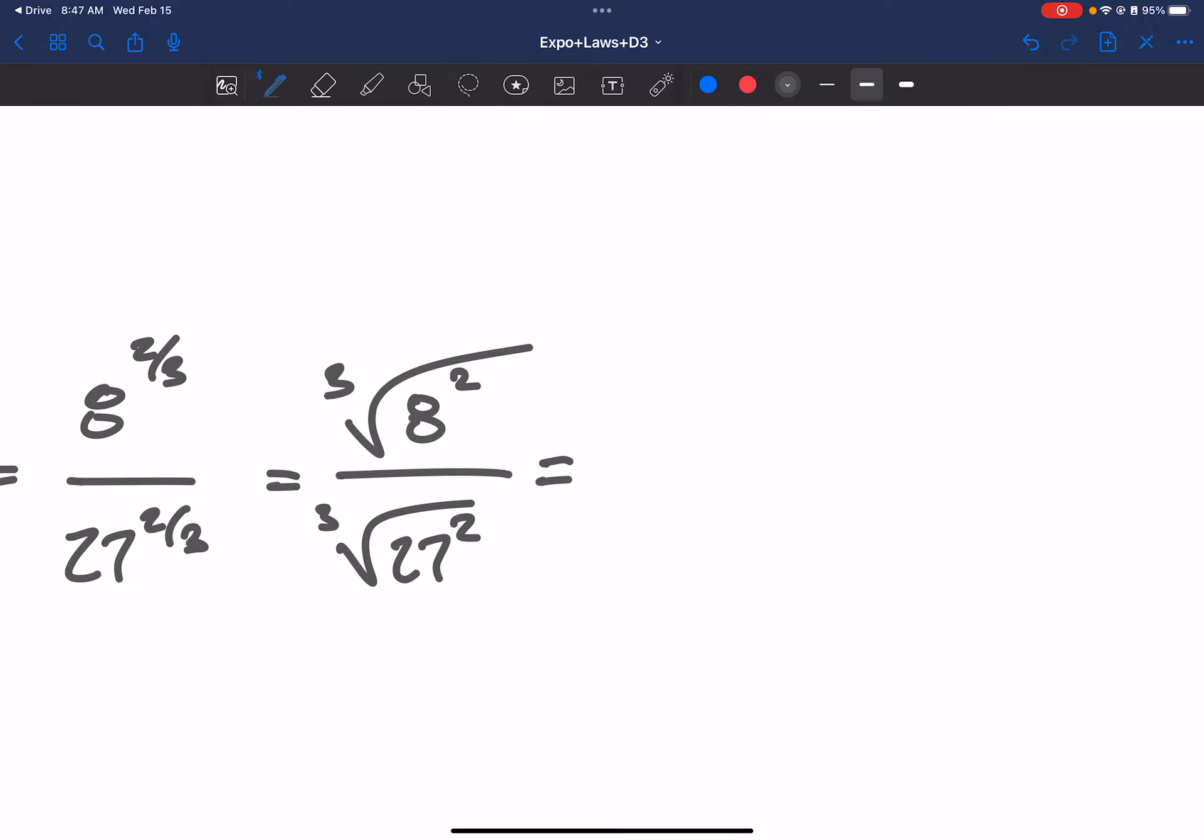So we can have 8 to the 2 3rds over 27 to the 2 3rds. So really what we have is we have 8 squared, but cube rooted, and cube rooted of 27 squared. And what we can do here is we can actually, instead of doing the squares here, we can put the squares outside. It doesn't really matter. And this makes our life a little bit easier because cube root of 8 is a nice small number. It's just going to be 2. And so then that's being squared. And same thing, cube root of 27 is 3, and that's being squared. So really we have 4 over 9.